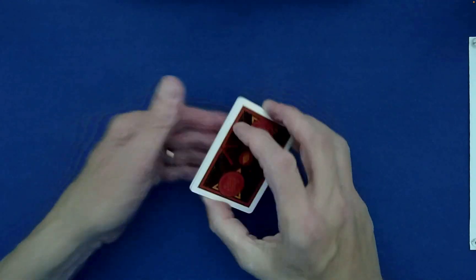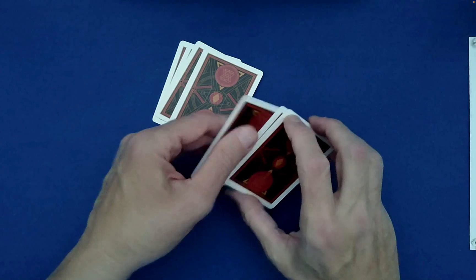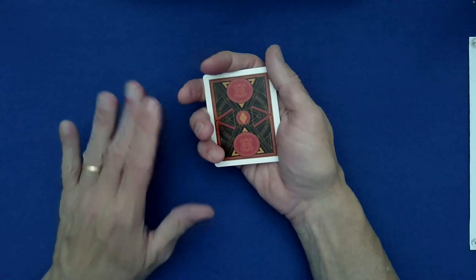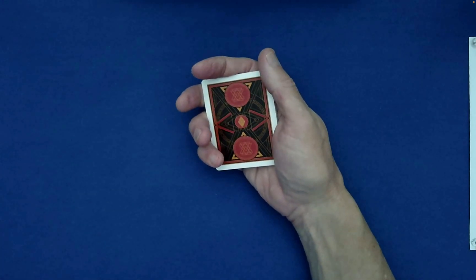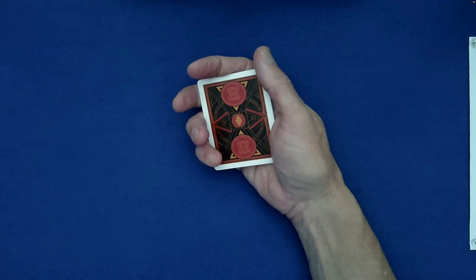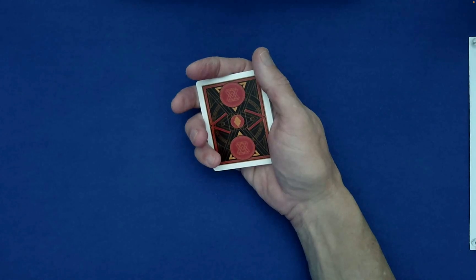We can do a Klondike shuffle. That's a famous shuffle. This is where you take the top and bottom off as one.